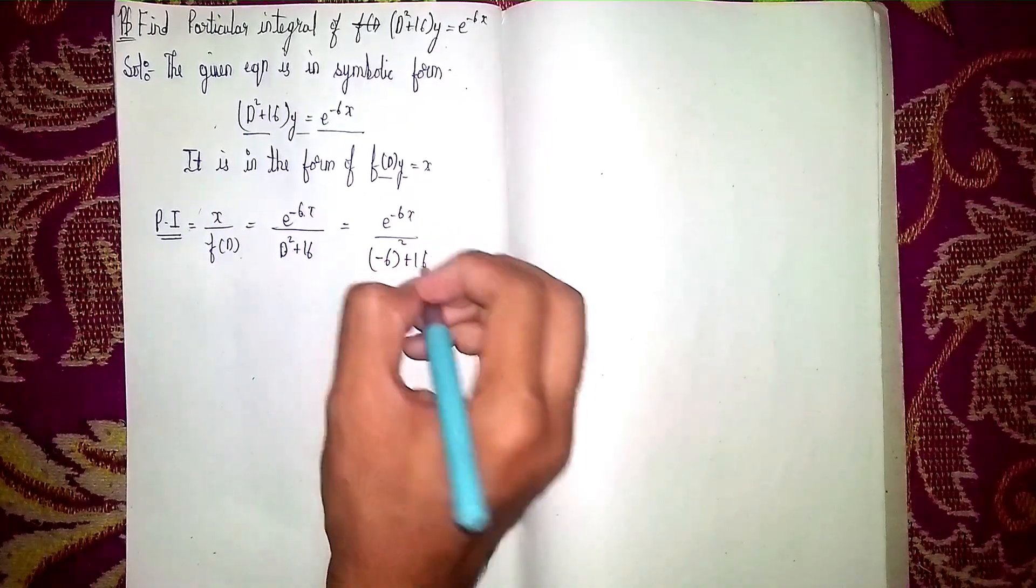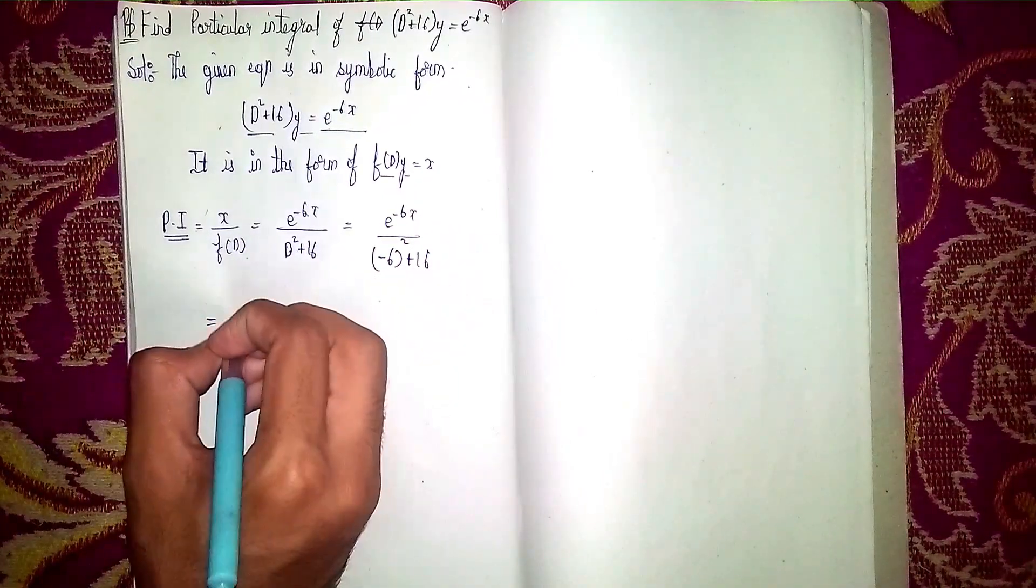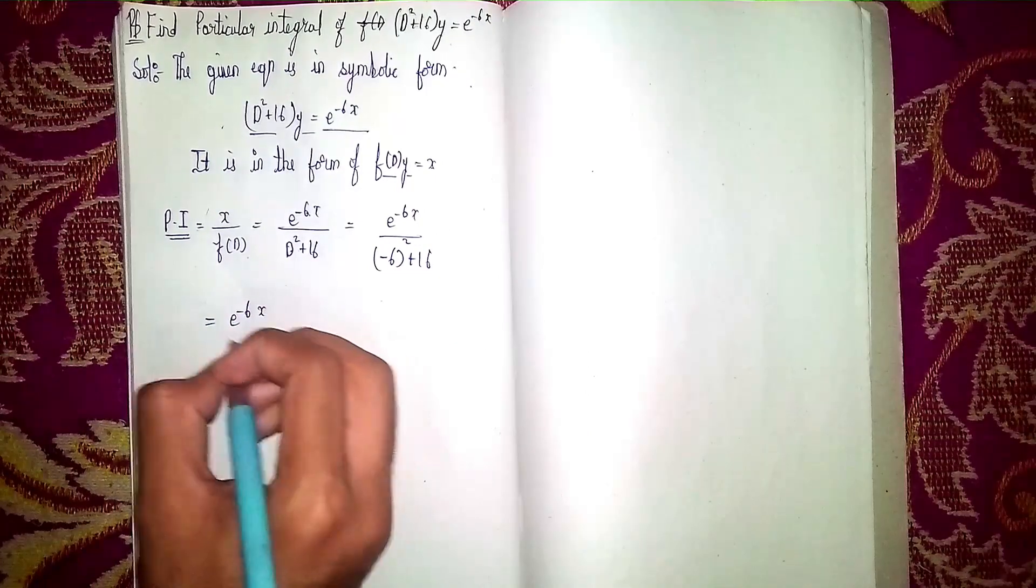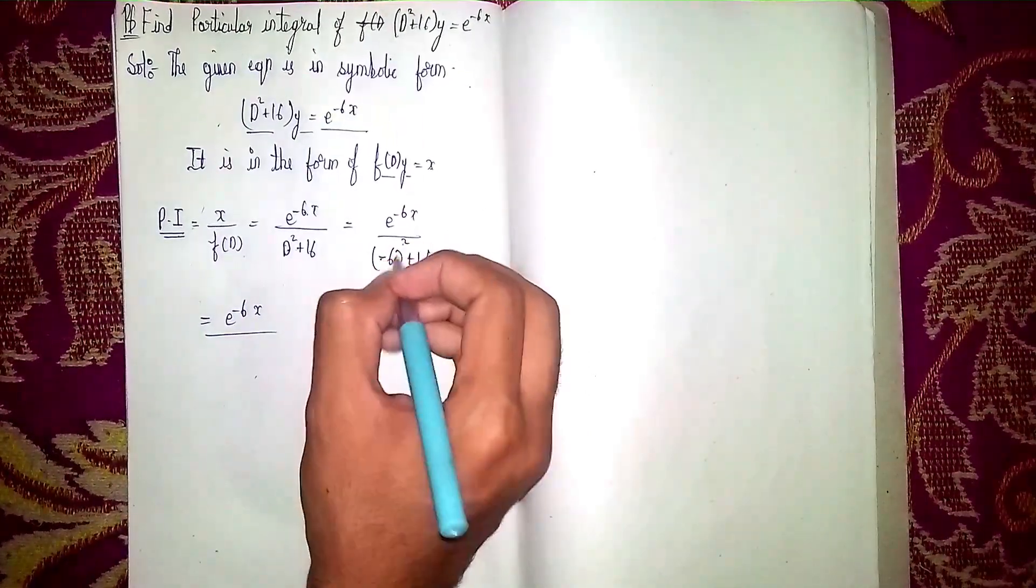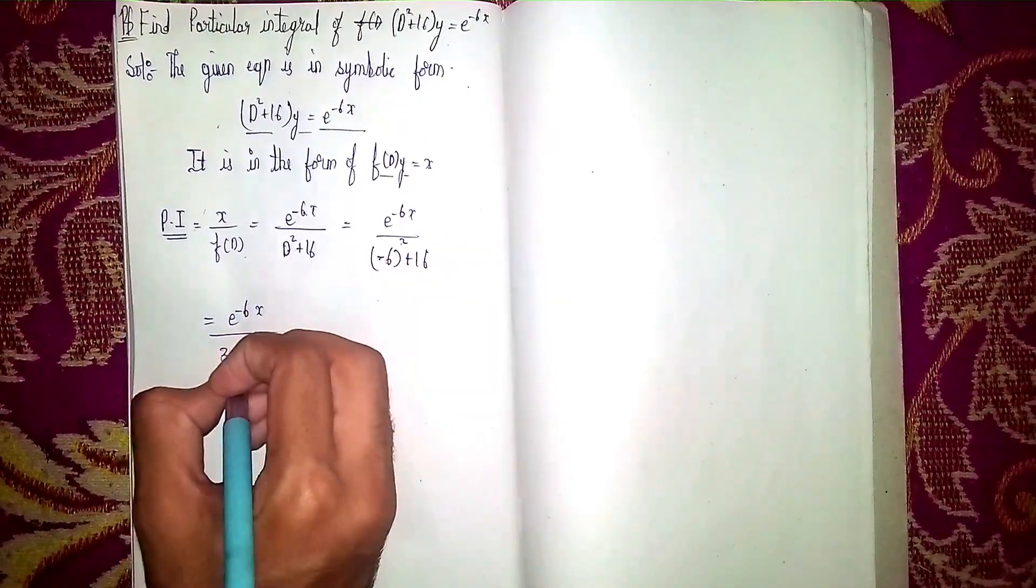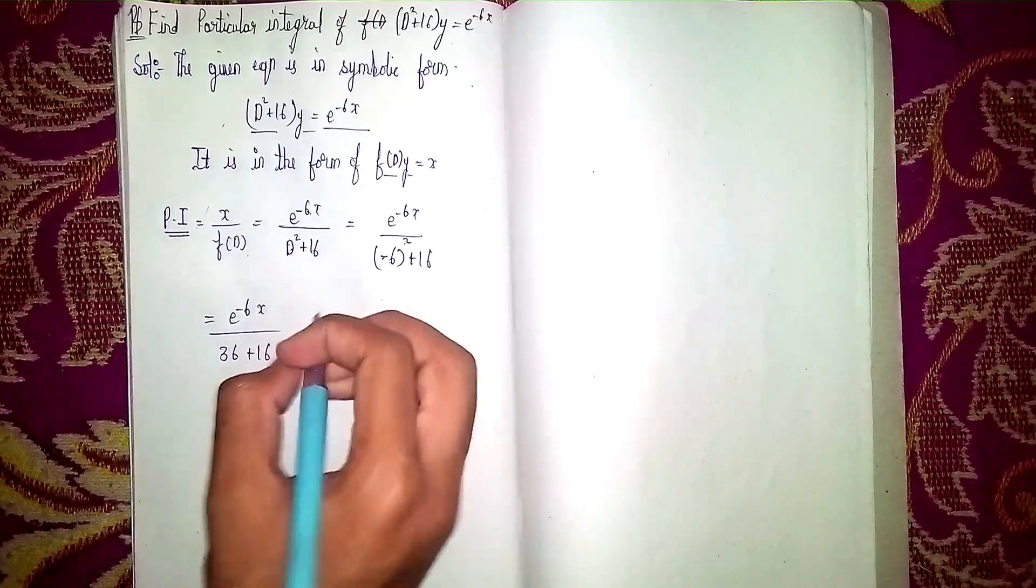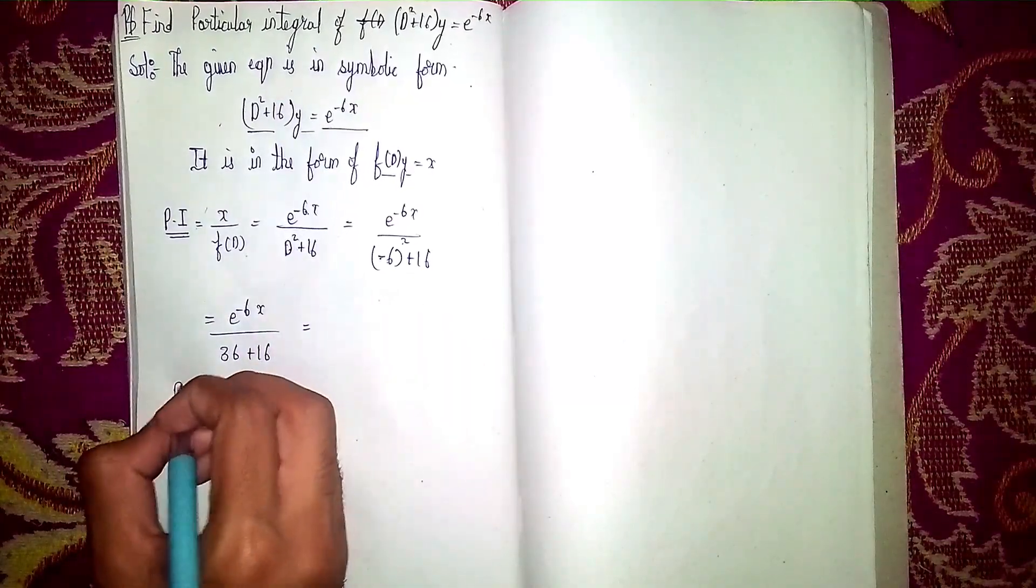Okay, so it will become e^(-6x) divided by... Now minus times minus becomes plus. 6² means 36. 36 + 16. Now what is our particular integral?